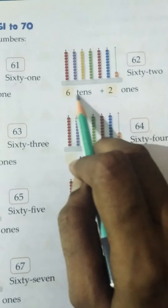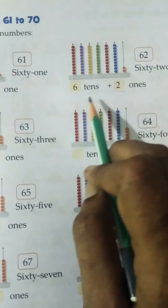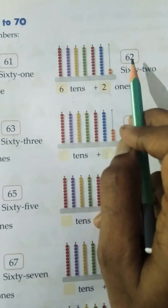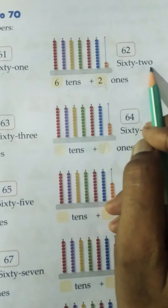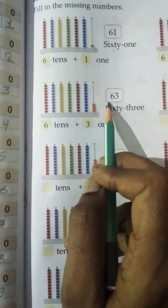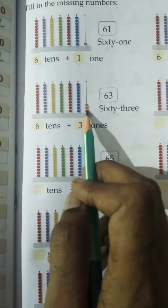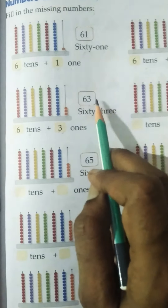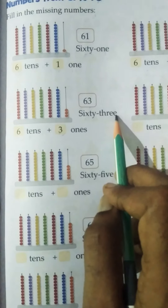Next. There are 6 tens — 1, 2, 3, 4, 5, 6. And ones? 1, 2 — only 2 ones. So 6 tens plus 2 ones is equal to 62. Spelling: S-I-X-T-Y (60), T-W-O (2). 62. Next number is 63. 6 tens: 1, 2, 3, 4, 5, 6. And ones: 1, 2, 3 — 3 ones. 6 tens plus 3 ones is equal to 63. Spelling: S-I-X-T-Y (60), T-H-R-E-E (3). 63.